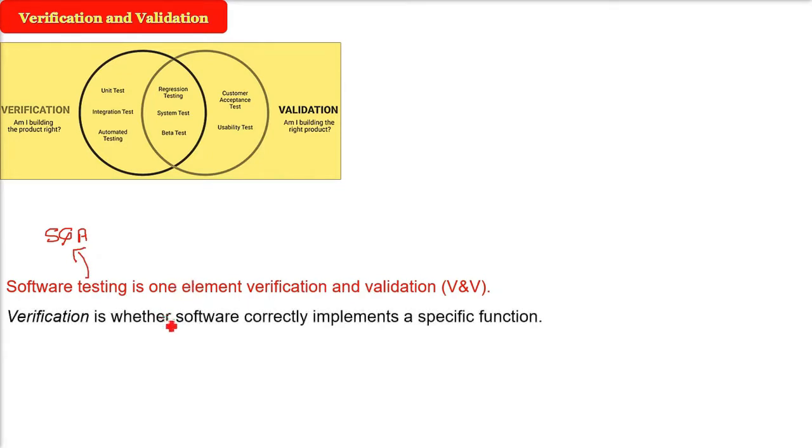Verification is whether software correctly implements a specific function. That is, if you have made something, is it working correctly? This is verification. Validation is: what you have done, does the user want? That is, whether software is traceable to the customer requirement.